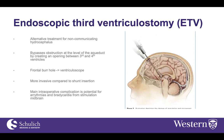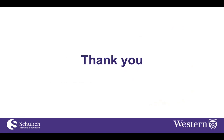Compared to VP shunt insertion, ETV is slightly more invasive, but the overall anesthetic considerations are very similar. One additional consideration is that because the ventricular scope operates very close to the midbrain, there is potential for midbrain stimulation or irritation leading to arrhythmias and bradycardia, which must be monitored throughout the intraoperative course. Otherwise, management is relatively straightforward and similar to VP shunt insertion.